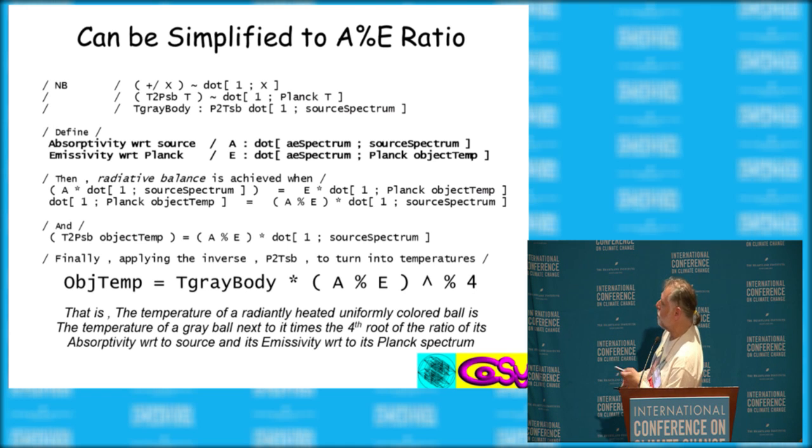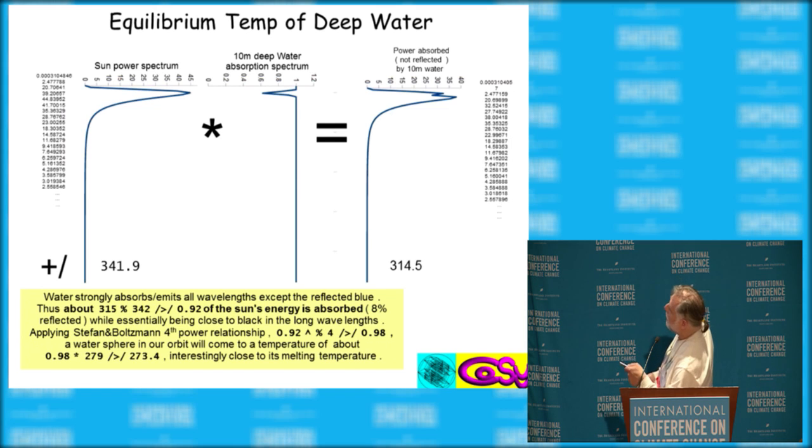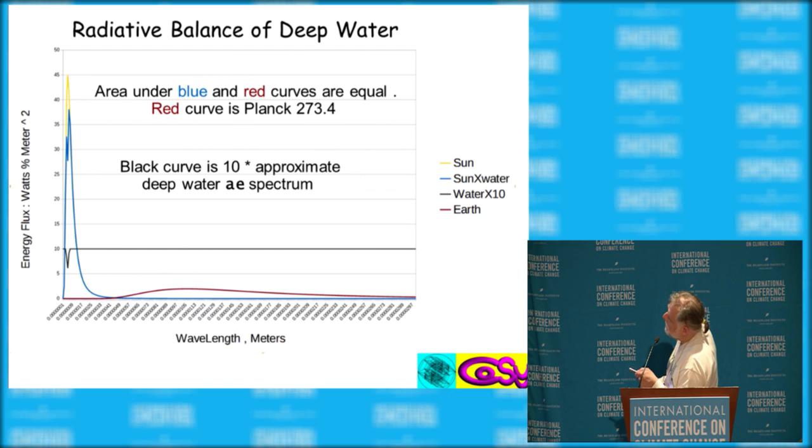This just goes through showing that it's a ratio. Here is an equilibrium temperature for deep water and approximation. And that cuts down the energy absorbed by the sun. The areas under the blue curve and the red curve are still the same.